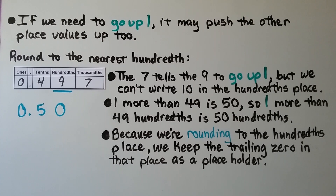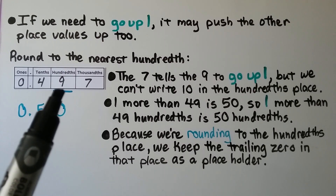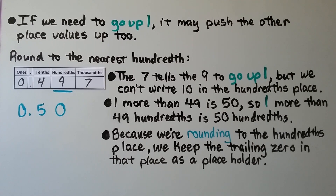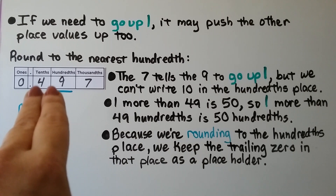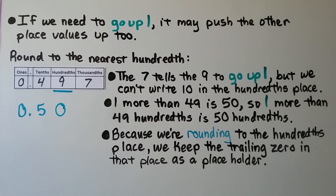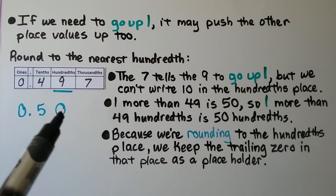If we need to go up one, it may push the other place values up too. Round to the nearest hundredth. We have 497 thousandths. The seven tells the nine to go up one, but we can't write 10 in the hundredths place. One more than 49 hundredths is 50 hundredths. And because we're rounding to the hundredths place, we keep the trailing zero in that place as a placeholder.